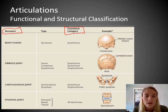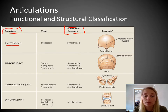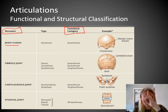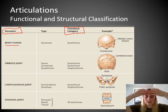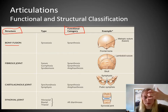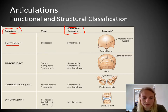If we're going to classify based on structure, the first one is called a bony fusion — you can imagine what that means. It's where two bones have fused together. As our frontal bone forms in the fetus, it starts off as two separate bones called ossification centers. As it grows, they come together and eventually fuse. So we do have a joint right here, but it's been fused for a long time in adults. That is the structural classification.